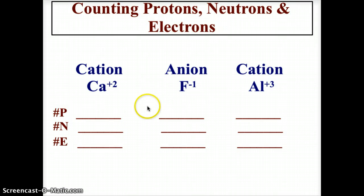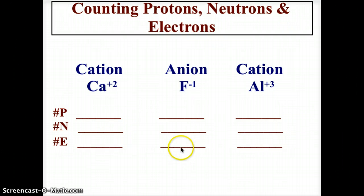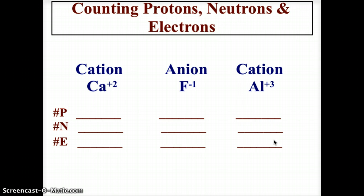For fluorine, the atomic number is 9, so the proton number is 9. The neutron number is 10 because the mass is 19, and 9 plus 10 is 19. Because it's a negative 1 charge, it has 1 more electron than proton, thereby having 10 electrons. For aluminum, the atomic number is 13, so the proton number is 13. The mass is 27, so it needs 14 neutrons. Because it's plus 3, there are 3 more protons than electrons, so it has only 10 electrons.